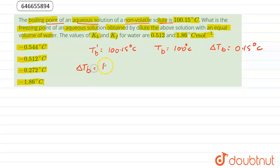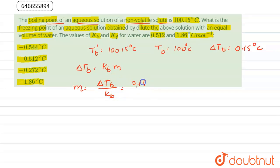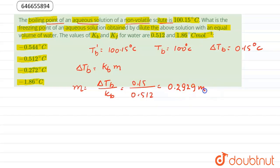ΔTb can be expressed as Kb × m, so we can calculate the molality of the solution: molality = ΔTb / Kb = 0.15 / 0.512, and on solving this we get 0.2929 mol per kg. This is the molality for this solution.